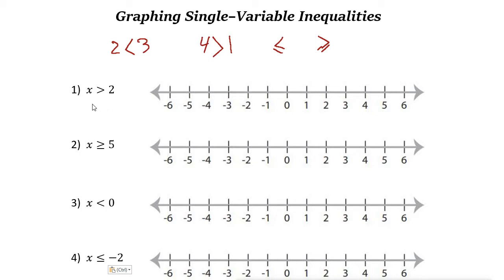Let's take a look at this example: we want to graph x is greater than 2. To graph it, we use a number line. On the number line, 2 is here. Since x must be greater than 2, and 2 is not greater than 2, we cannot include 2. So we draw an open circle at 2 and move toward the right side.